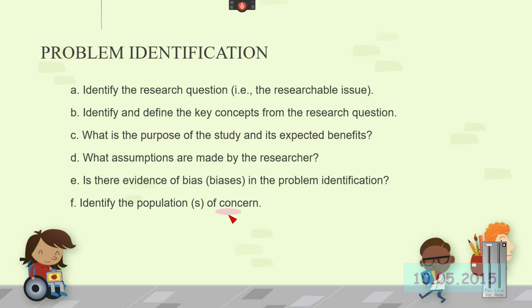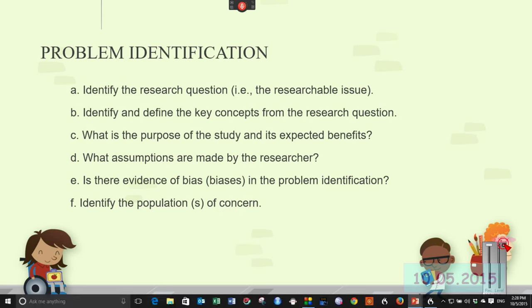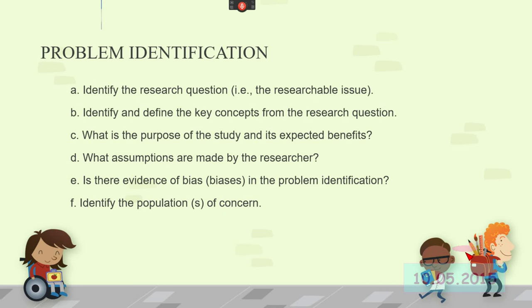Identify the key concepts in the research question. That's going to have you looking into the methods section of your paper. The purpose of the study and the expected benefits are often found in that first paragraph. Sometimes the researchers will make clear what their assumptions are. Sometimes they won't. See if you can ascertain those by reading the article. Is there evidence of bias or biases in the problem identification?